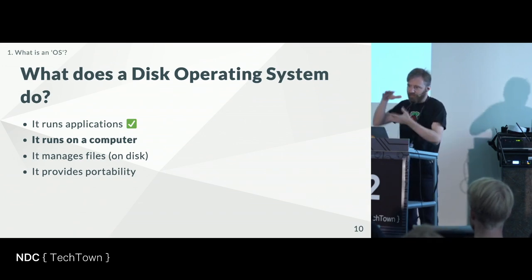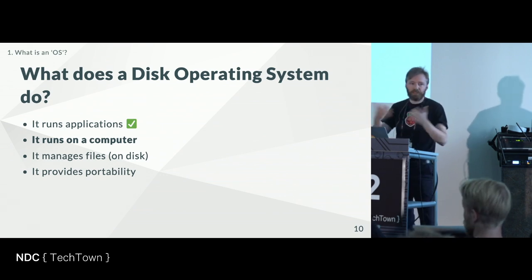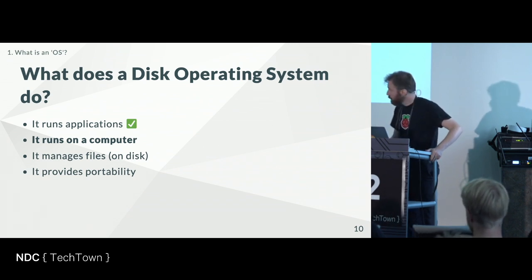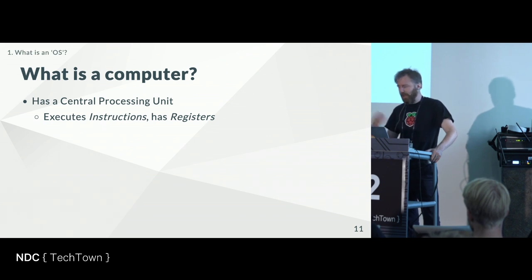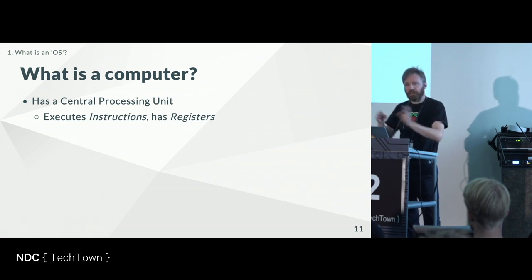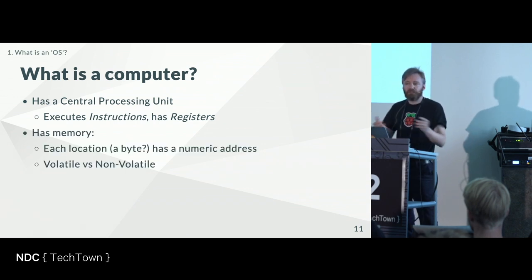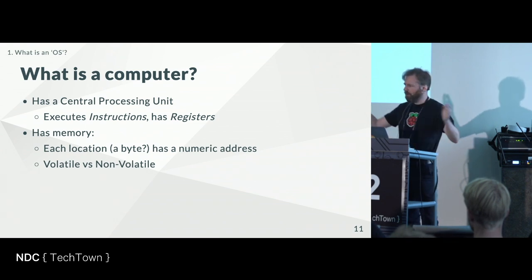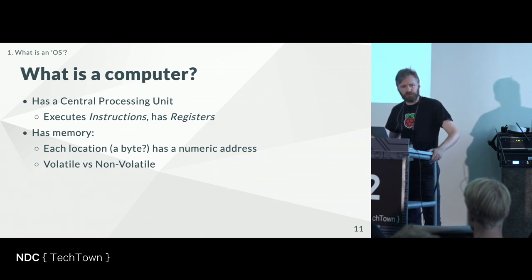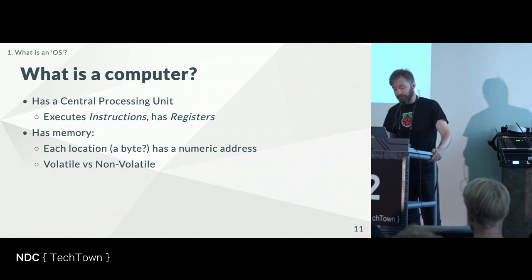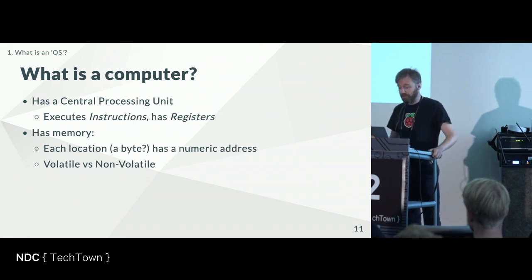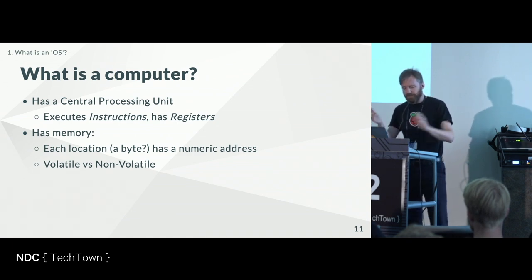We get a sense of what an application is: some input, some output, some storage. So a disk operating system runs on a computer. What is a computer? It has a CPU that executes instructions — it doesn't judge us, it just does what it's told — and registers, little places to store data temporarily. But that's not enough; we need memory. I like to think of memory as the locker room at your local swimming pool: numbered boxes you can open, put something in, lock it, and it's still there later. That's basically what RAM is.